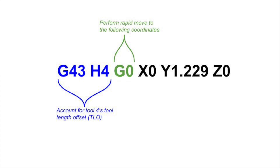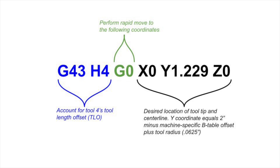The G0 will tell the machine how to move — in this case, it will be a rapid move to the coordinates that follow. The coordinates tell the machine where to place the tool relative to the origin of the three linear axes. The origin for all three axes is at the B table offset point, which is the center of the B axis and about 0.8 inches above the B table. This value is different for each machine, so be sure to check your Quick Start Guide to find your machine's unique B table offset.